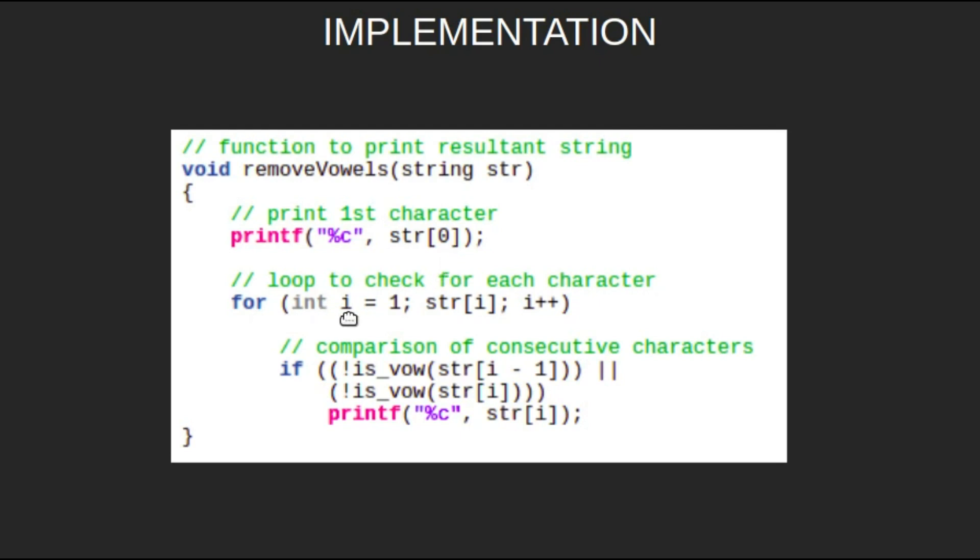Then we run a loop that traverses from the first to the last character of the string. We print a character only if the preceding character (i-1) was not a vowel or the current character is not a vowel.